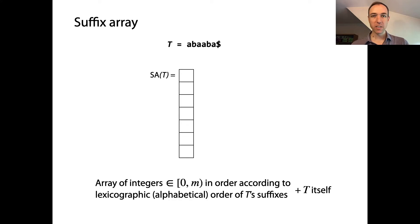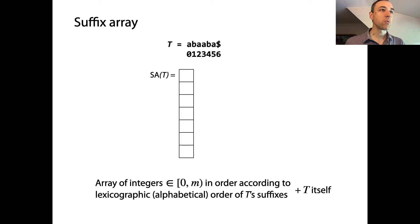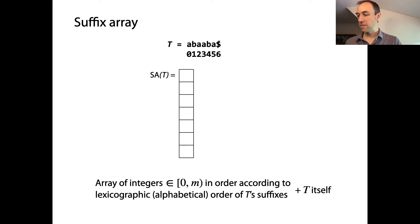To help us fill in this array, let me bring in another string here — the offsets of the suffixes. It's a little bit easier to refer to suffixes by their offset. Let's figure out what should be the order we put them in — what's the lexicographical or alphabetical order of these suffixes?